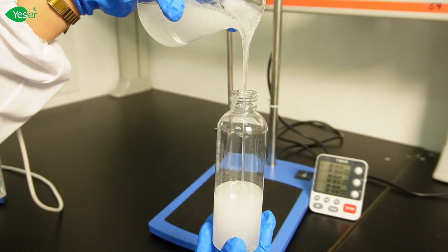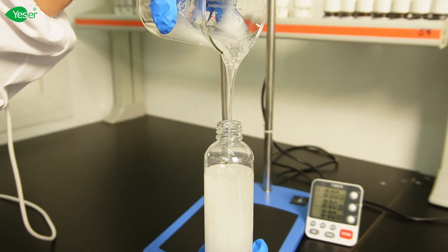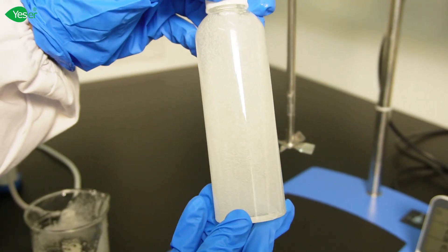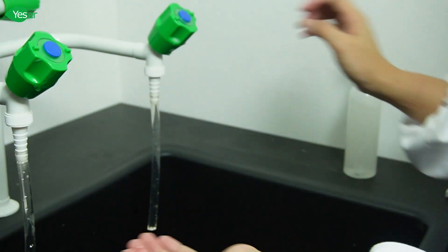Now that we've crafted our moisturizing and conditioning shampoo, let's take a moment to test its performance. While we typically test shampoos on hair, we can still observe its key qualities by washing our hands. First, let's take a small amount of shampoo.